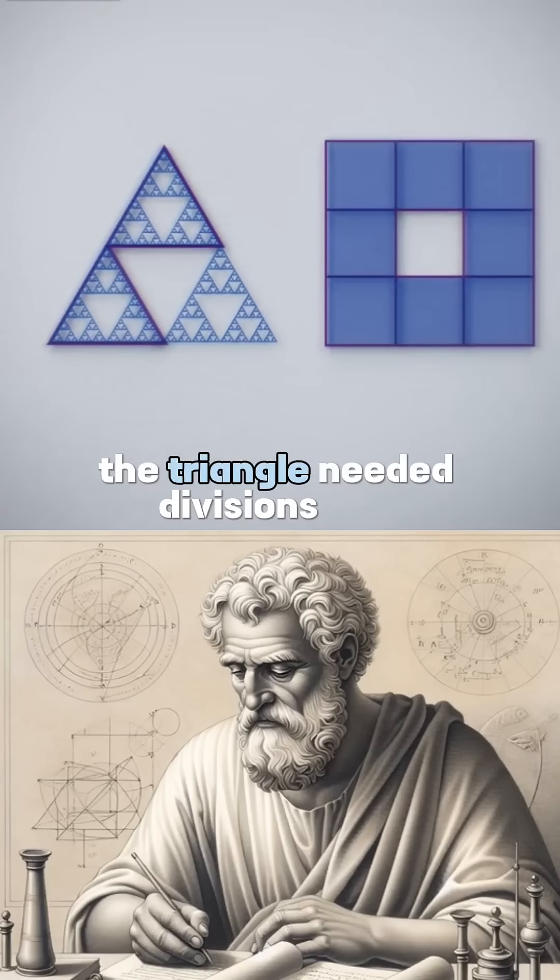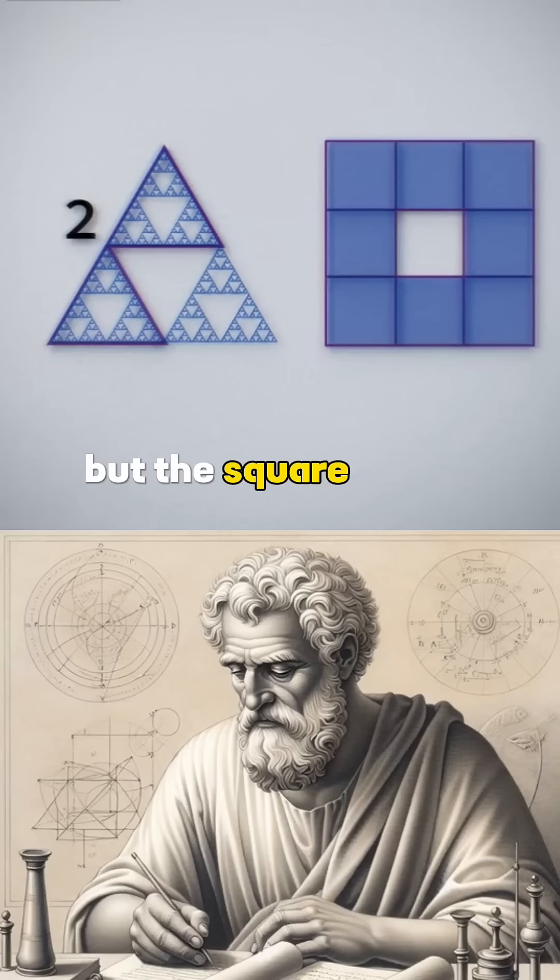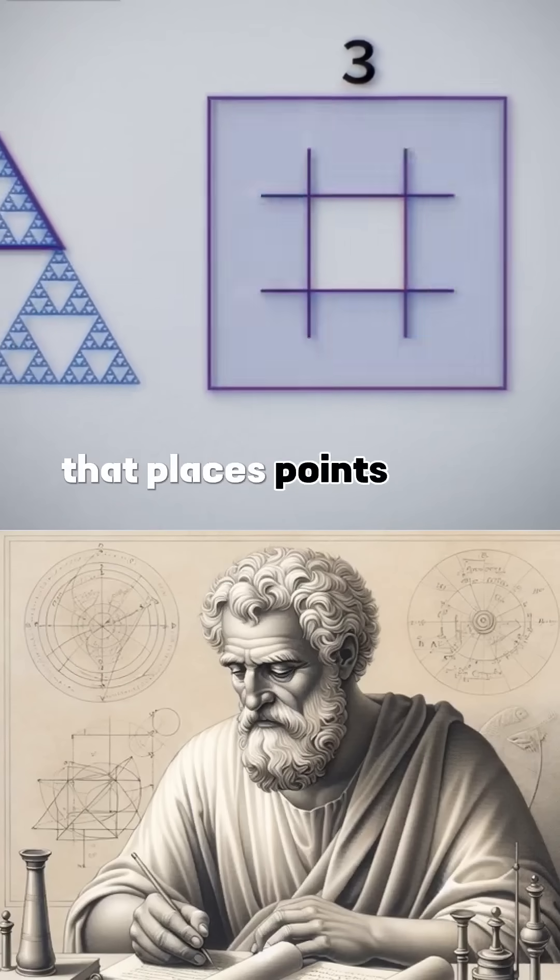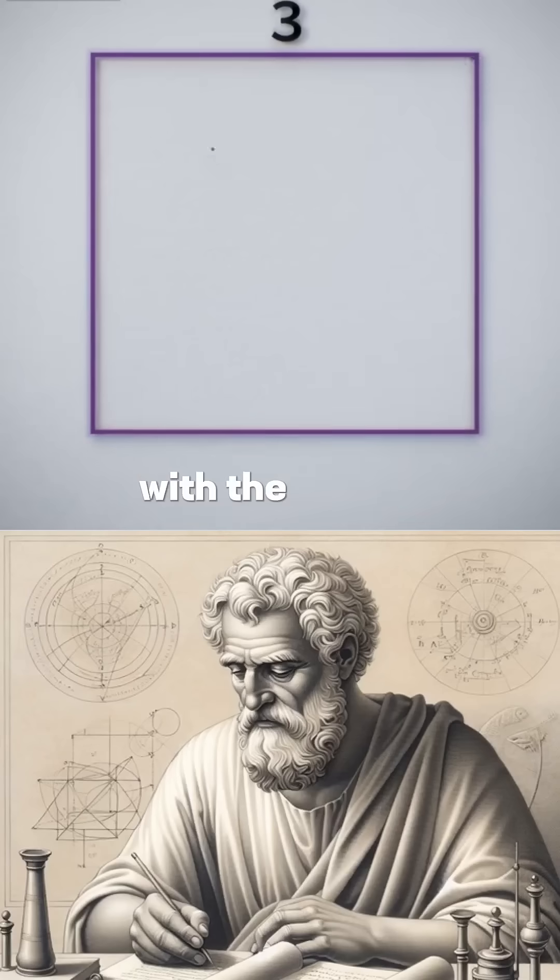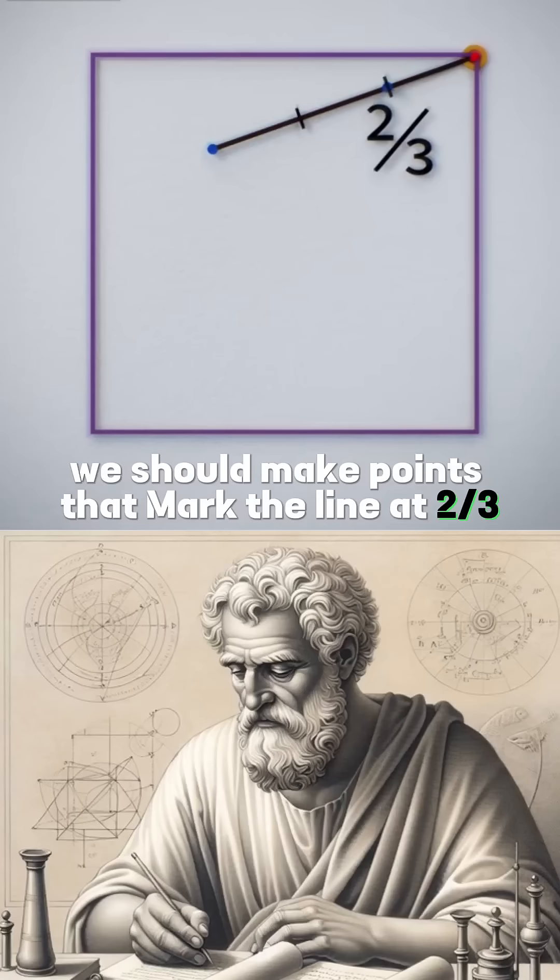The triangle needed divisions by two, but the square needs divisions by three. As opposed to the pattern that places points in the middle of the lines, with the square, we should make points that mark the line at two-thirds.